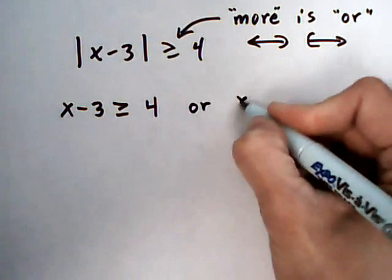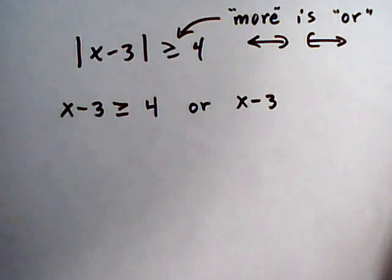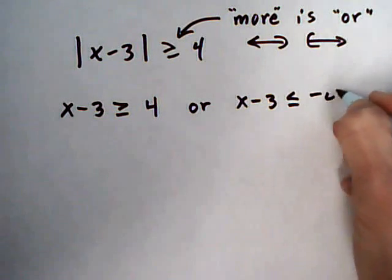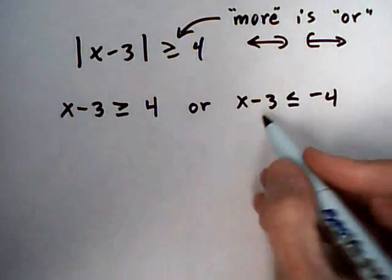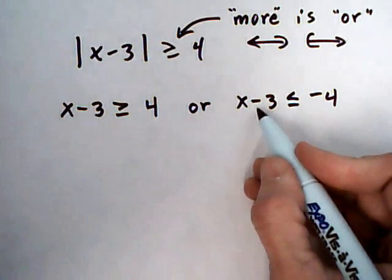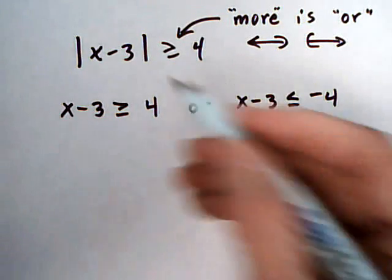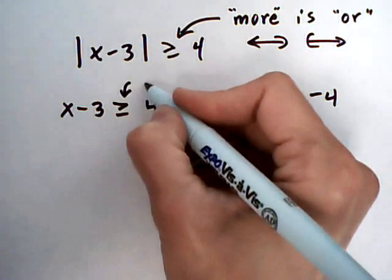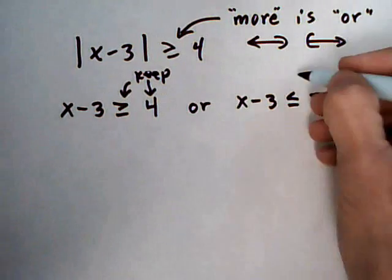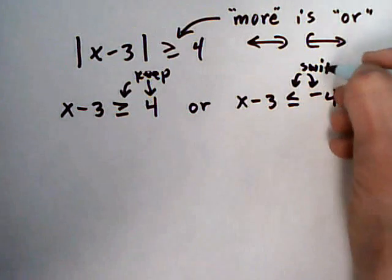Or the insides again, x minus 3, switch the symbol, less than or equal to, switch the sign. And be careful not to switch the sign of the absolute value. Keep that the same as it was. But what we're doing here is keep the sign and keep the direction. And then switch the sign, switch the direction.